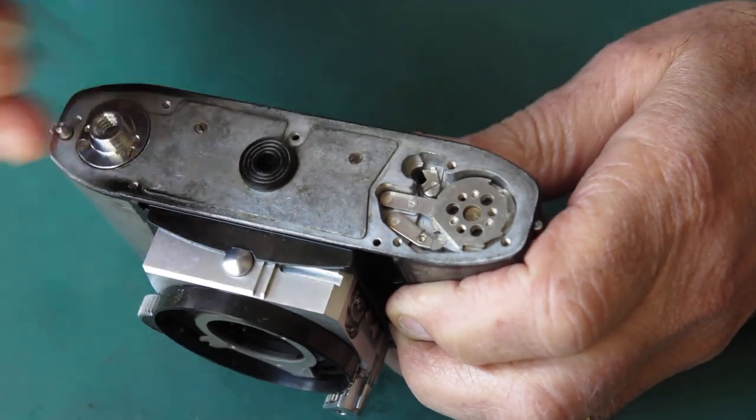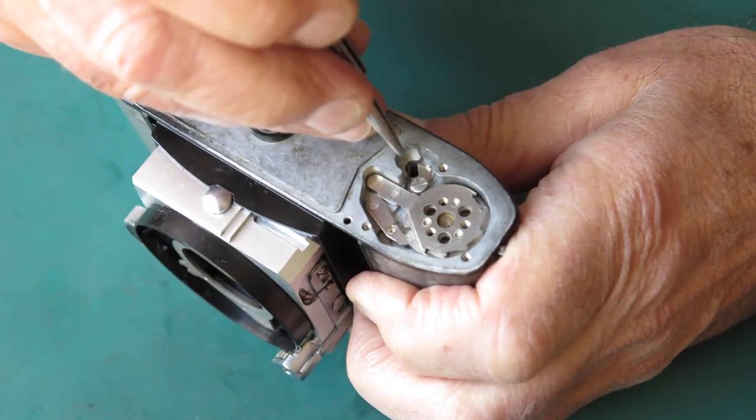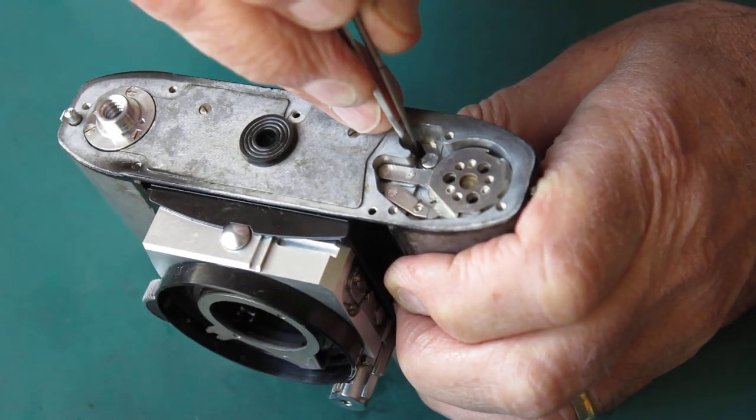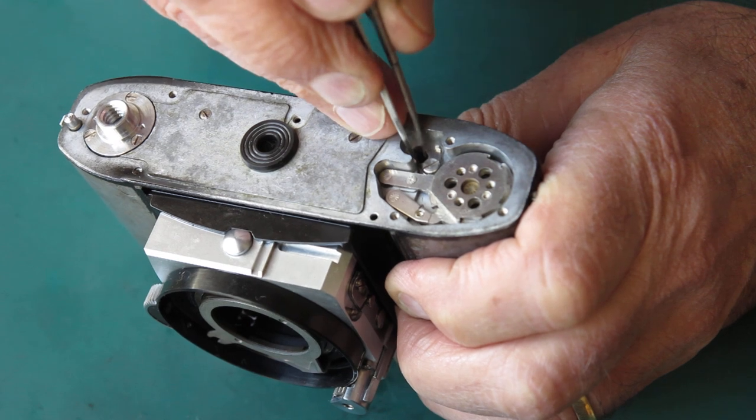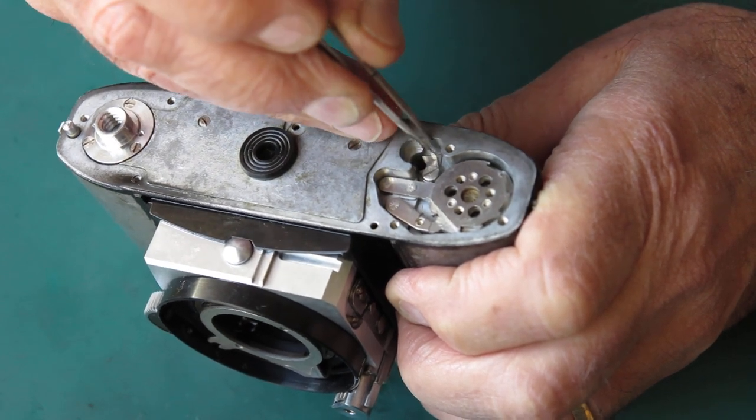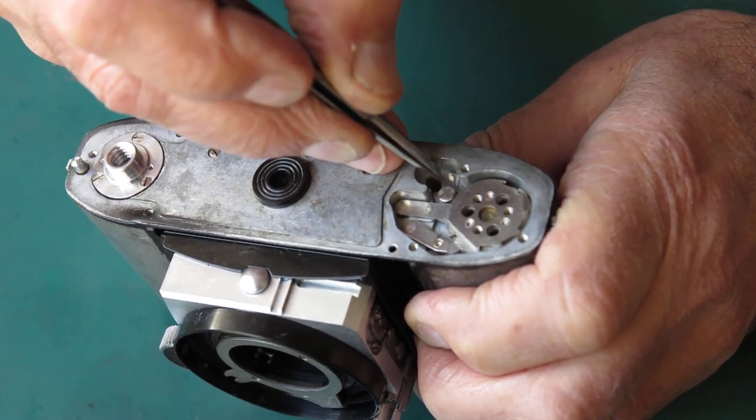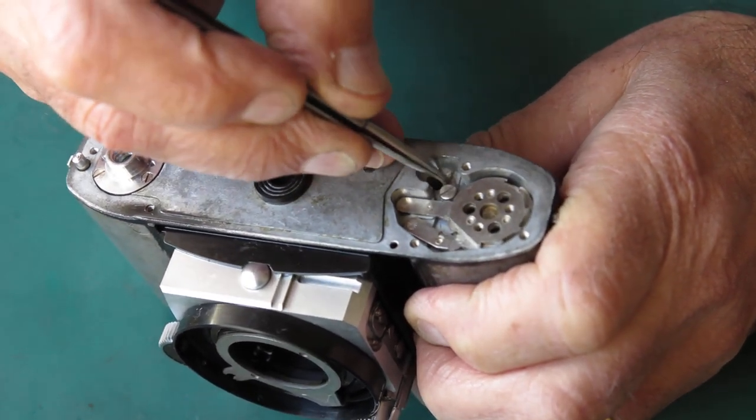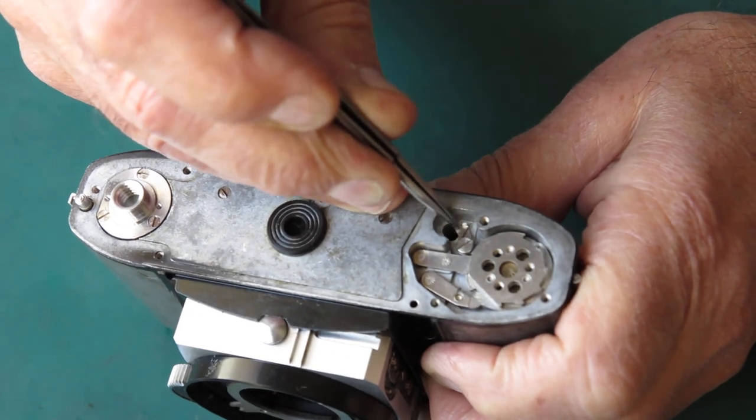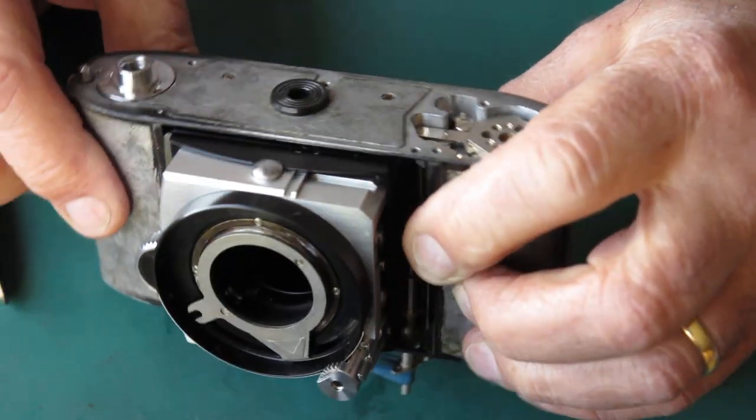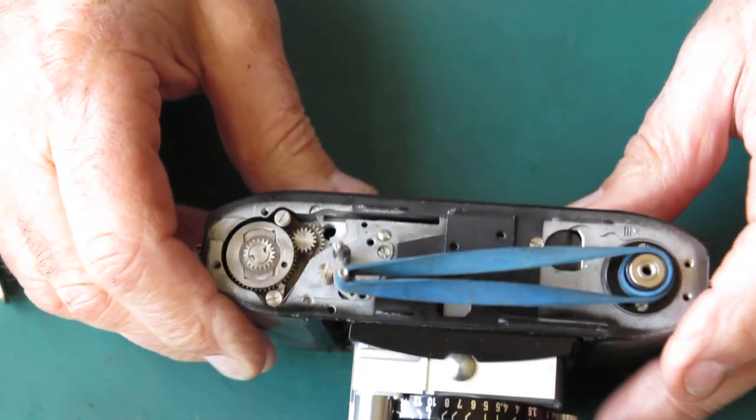I can tighten up the screw. Check that the lever moves. This tail of the spring here needs to be lifted over to here. I'll pick it up with my tweezers and lift it over. Sometimes it's easier said than done. This is now spring loaded.